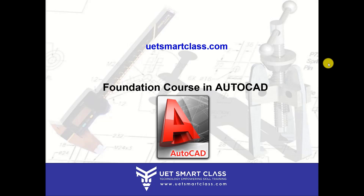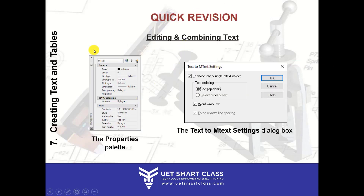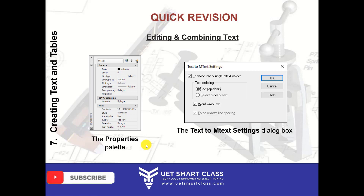Hello students, welcome back to the new session. Let's start with a quick revision. In the last class we learned about how to edit your text and combine text. In editing, you can do it through the properties palette or by invoking the editing tool — DDedit. You can even edit the scale or justification of your text by typing 'scale text' or 'justify text', and combining text changes single-line text into multiline text, with options to sort top to down or by selection order.